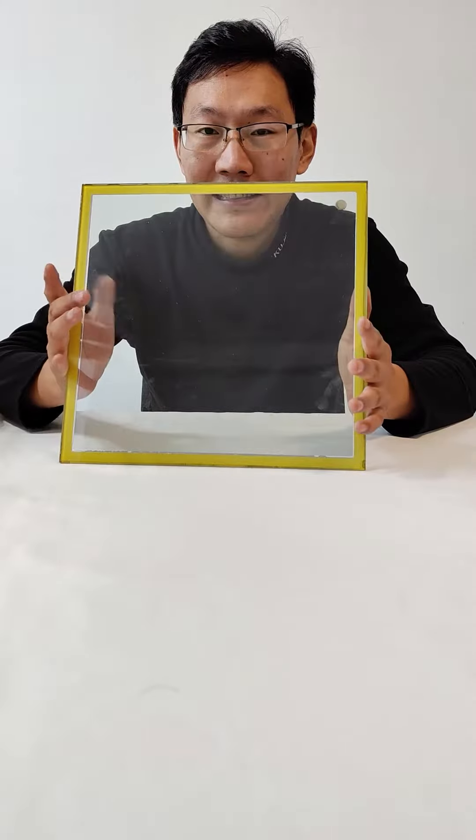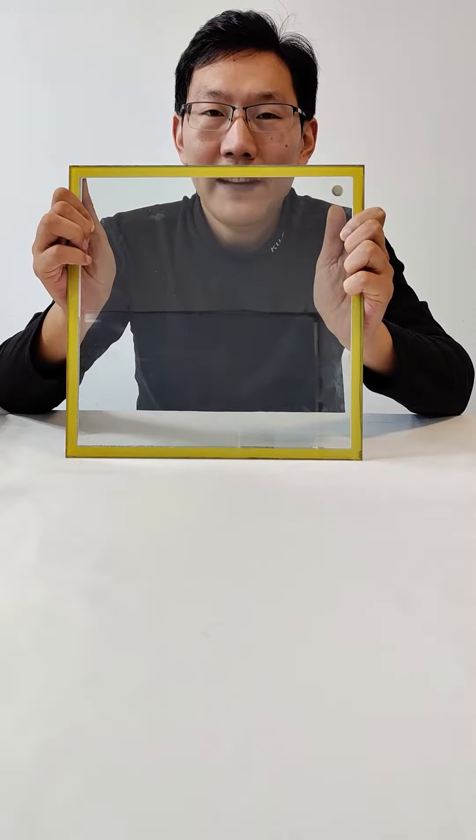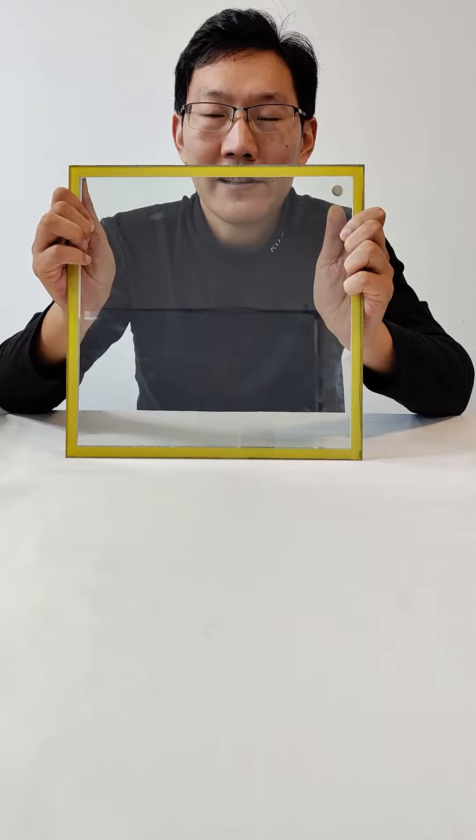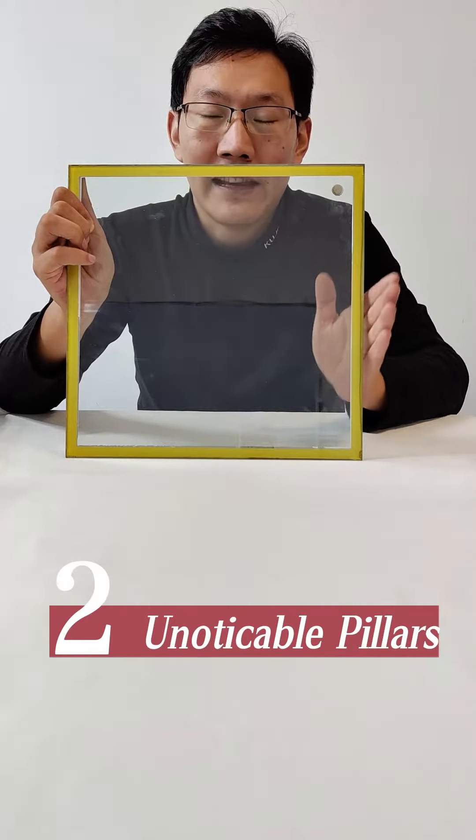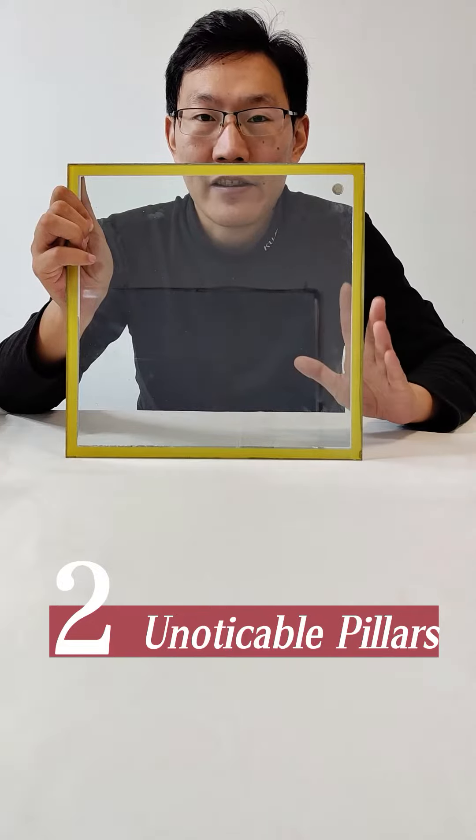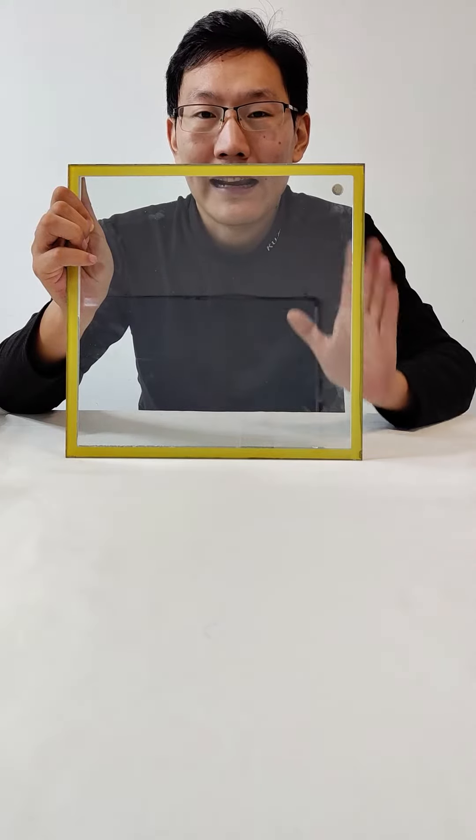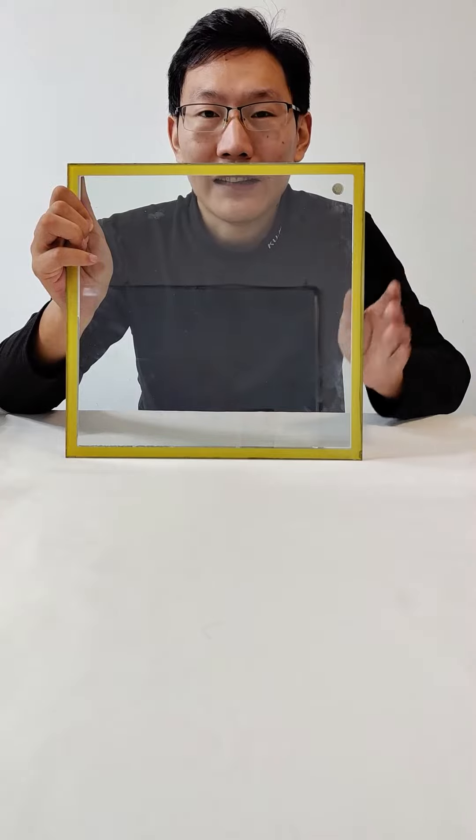The second feature of the vacuum insulating glass is its pillars. Many people don't like the pillars because it affects the visual appearance of the vacuum insulating glass, and it never exists in other glass products.